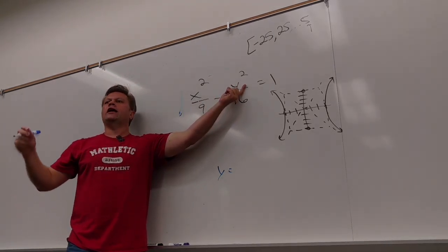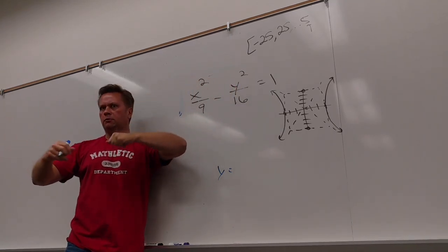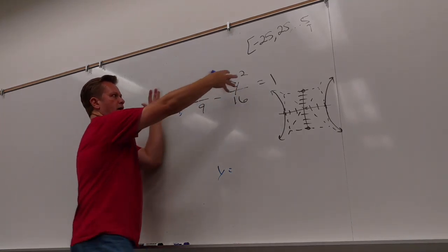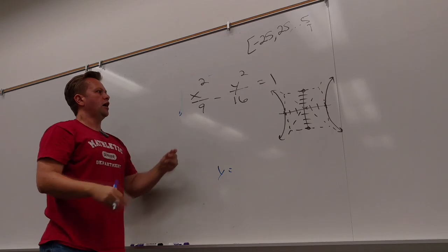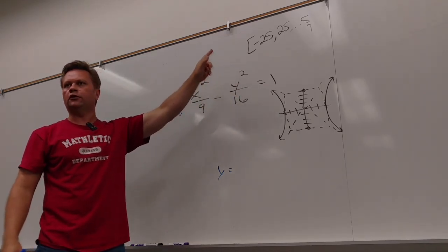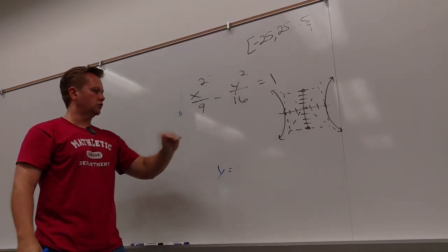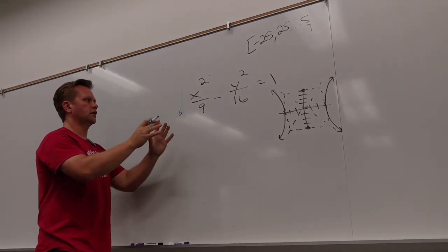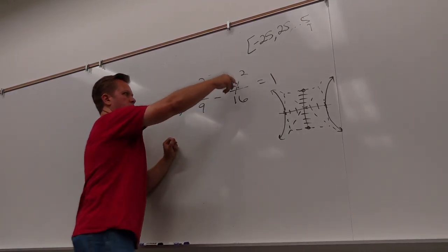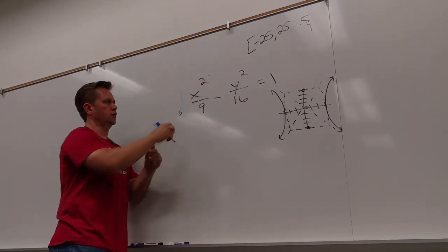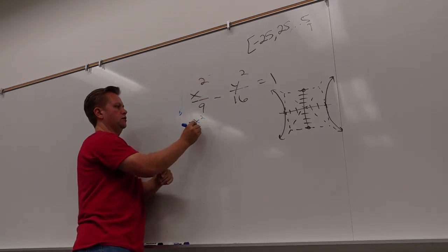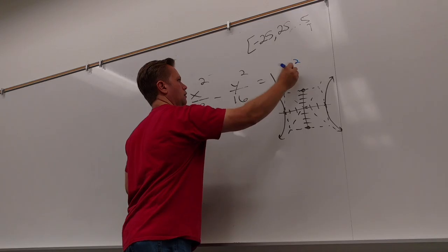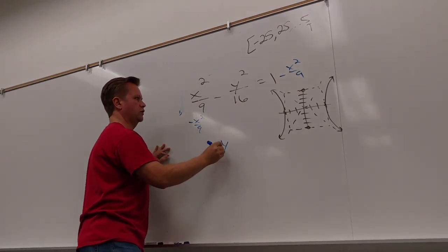If it was by itself, I could then take a square root and it would become y. But it's not by itself, so I can't do that. So I want to get this term by itself first. So how do I start to do that? How do I get this by itself? Yeah, I can subtract x squared over 9.